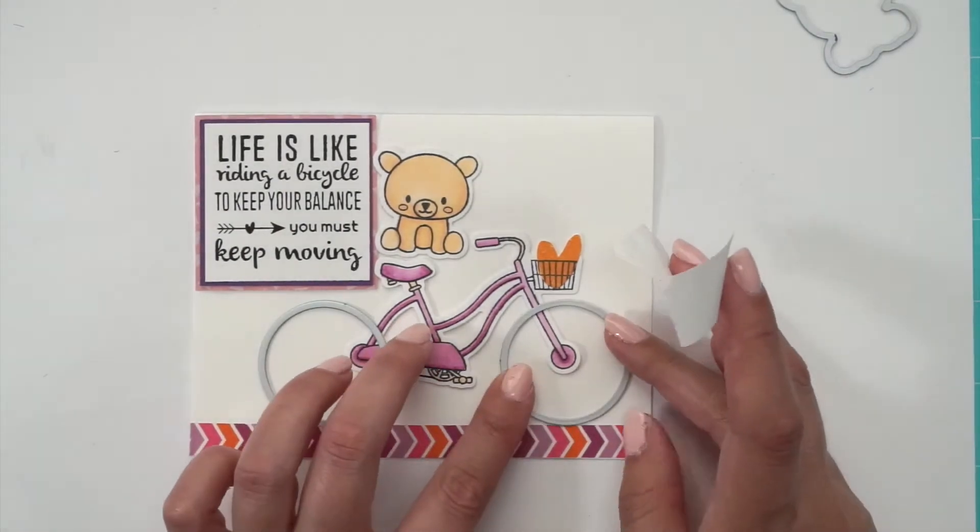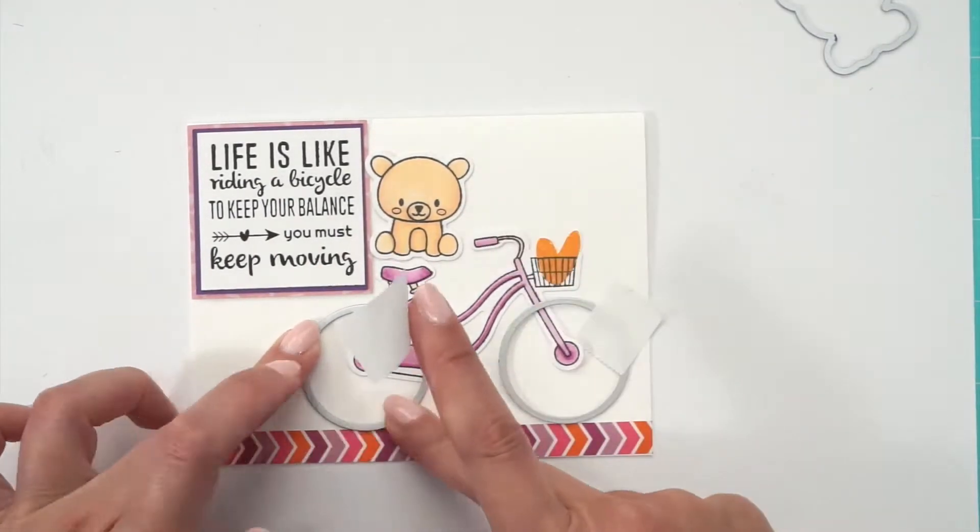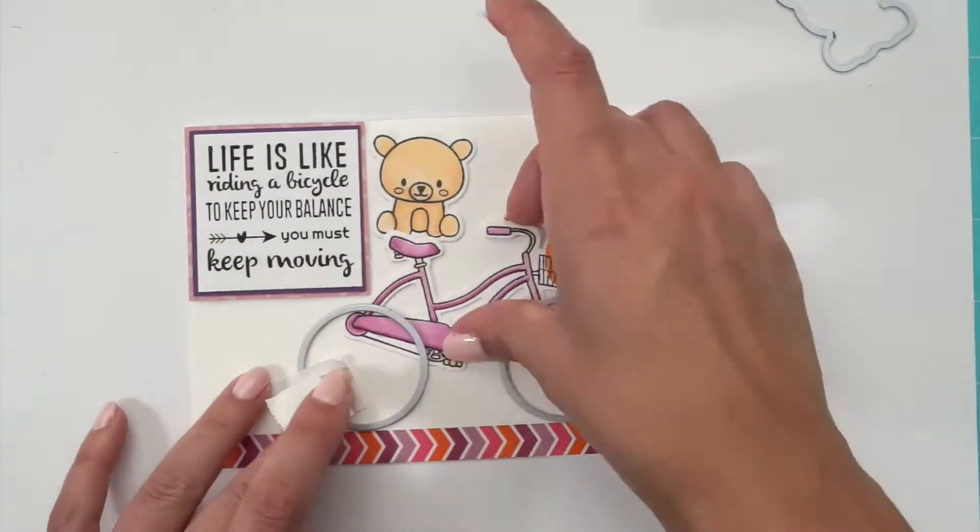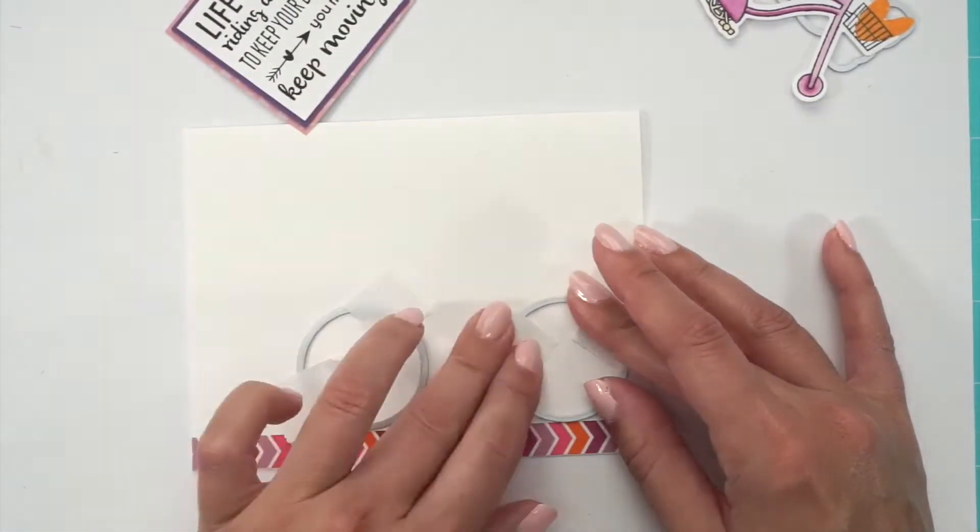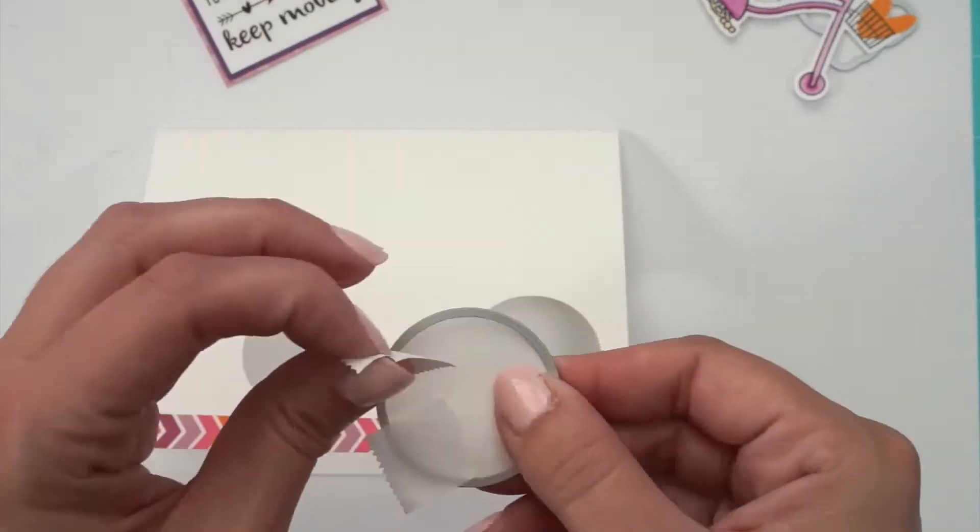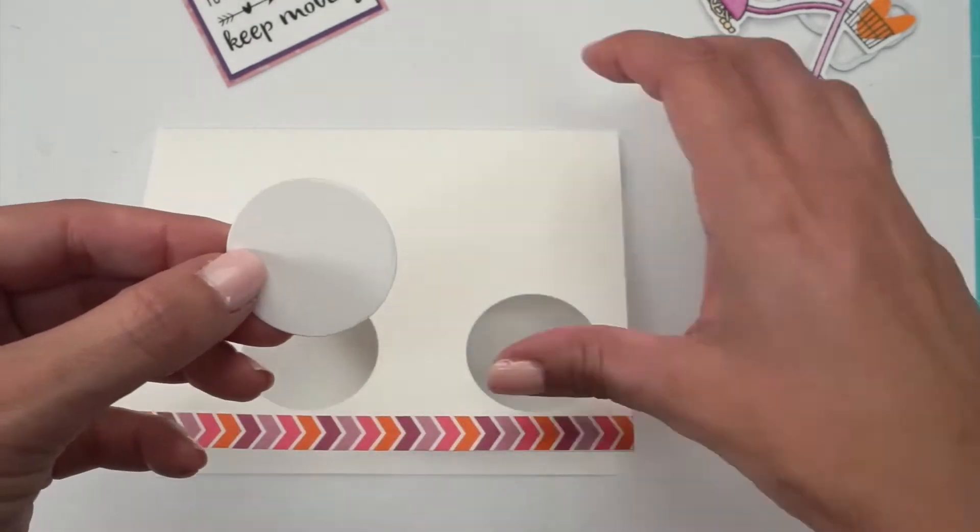For the base of the card, I used a really cute chevron washi tape that I thought was great as the road for the bicycle. The great thing about this set is that we decided to include two die-cuts for the wheels. So it makes everything so much easier. And then you just have to run it through the die-cut machine once.